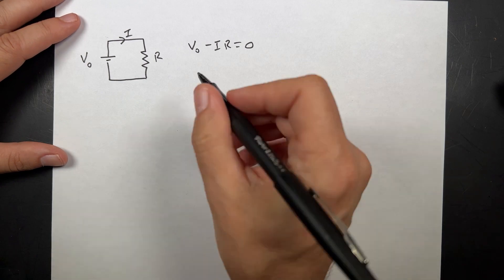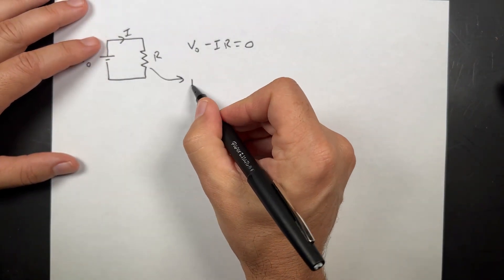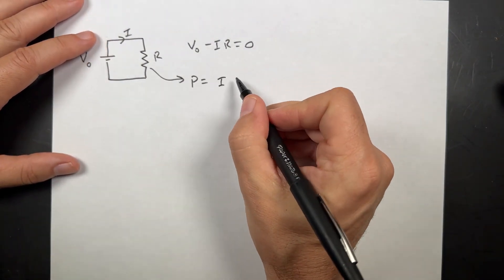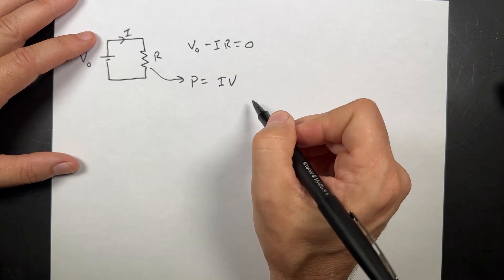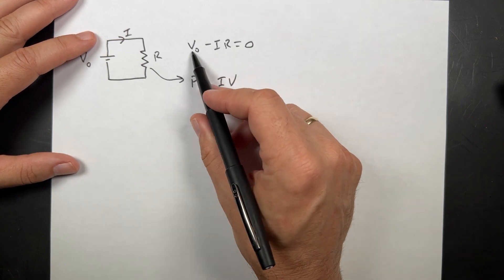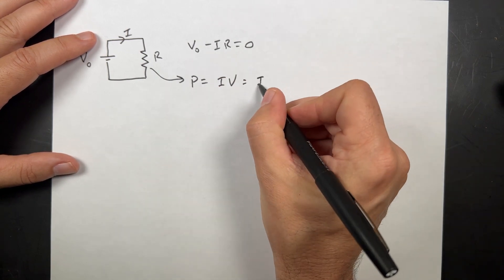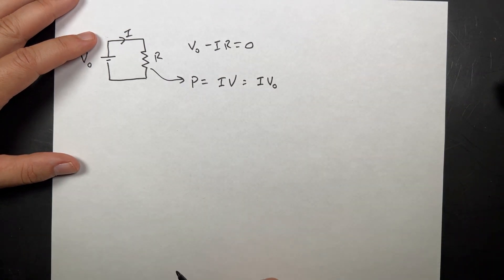We also know that the power from this resistor is going to be I times the voltage across that resistor, which is just going to be V0. So it's going to be I V0.